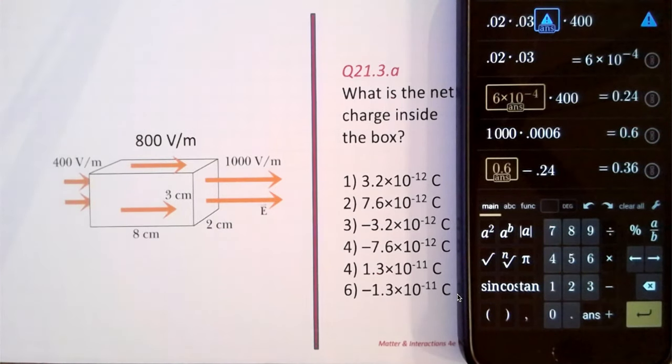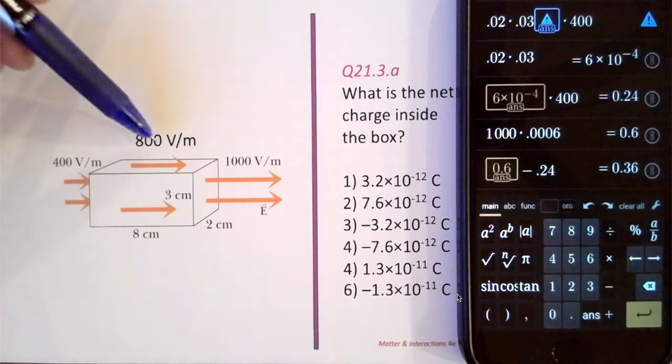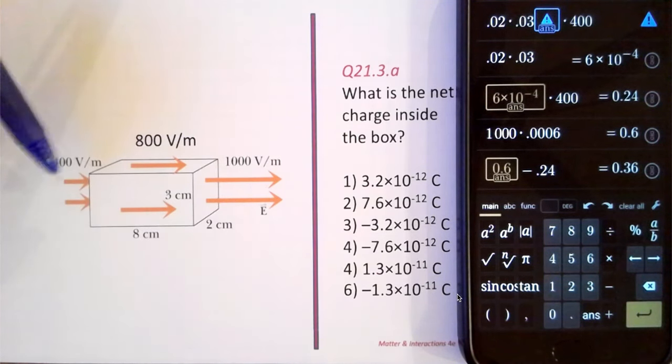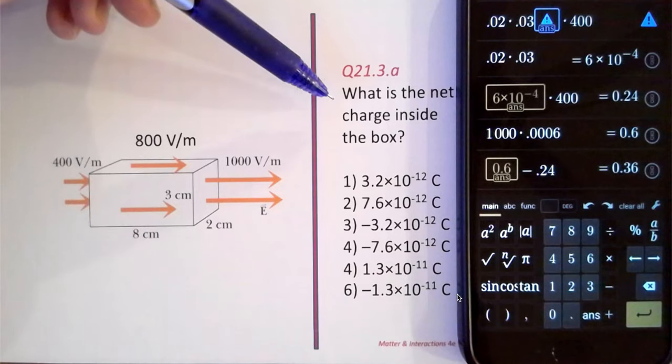Problem has the same scenario as last time: same rectangular box, same dimensions, same set of electric fields through the faces. The question is now asking what is the net charge inside the box?